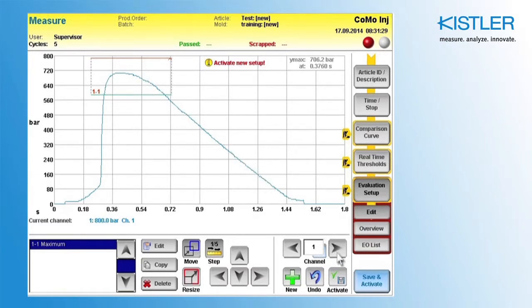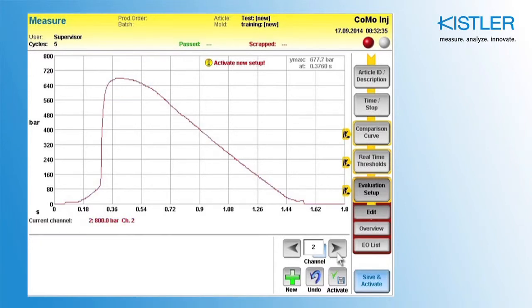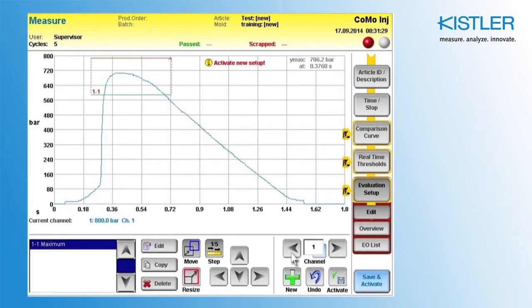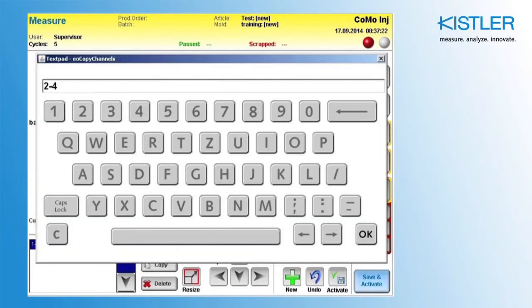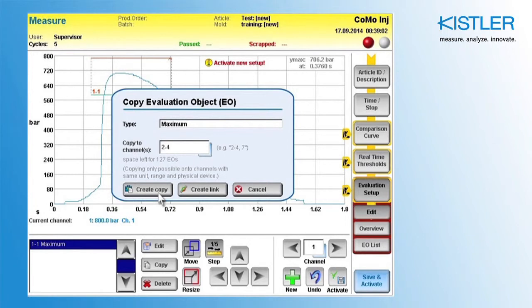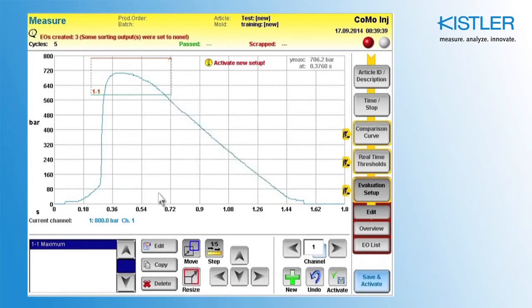Now we have created the evaluation object for Channel 1. In this example, the aim is to set up monitoring for 4 channels. The evaluation object can now be copied to the other channels, because the graphs move at more or less the same height. Copy the evaluation object and paste it in the other channels.